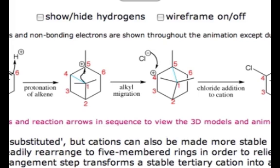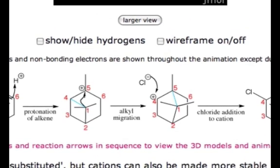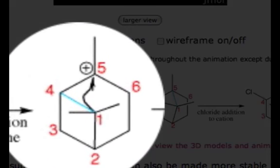In this example found on the ChemTube 3D website, we can take a look at the ring expansions shown here under rearrangements for ring expansion. In this particular model, shown in 2D at the bottom, we can take this four-membered ring and do a ring expansion of the carbocation to make a five-membered ring, therefore releasing some ring strain contained within that molecule.